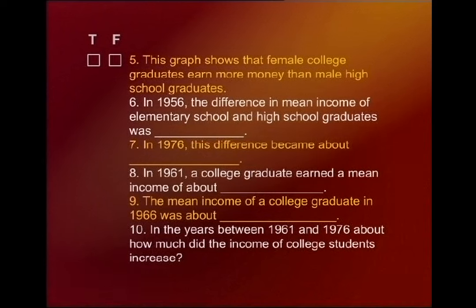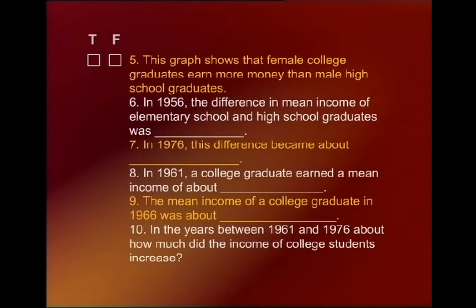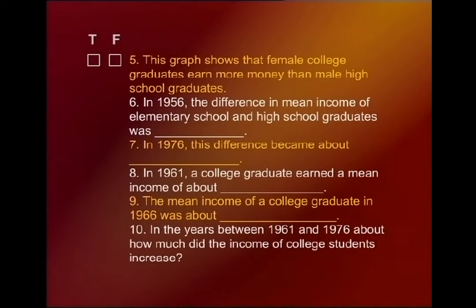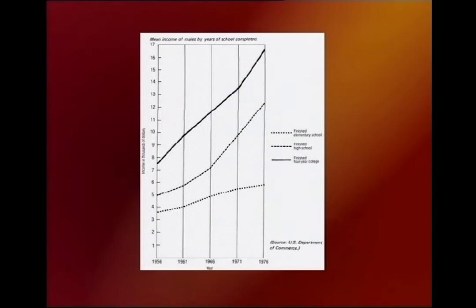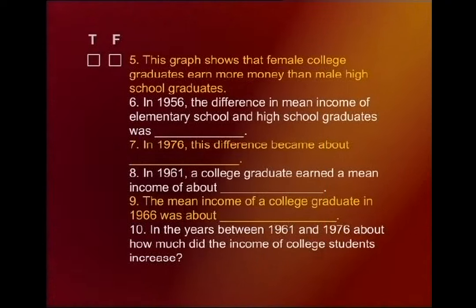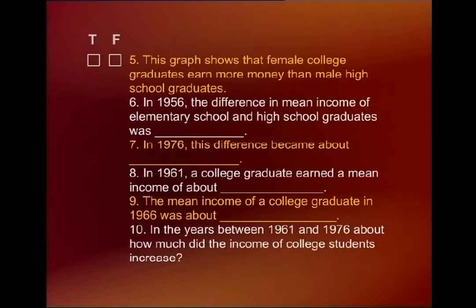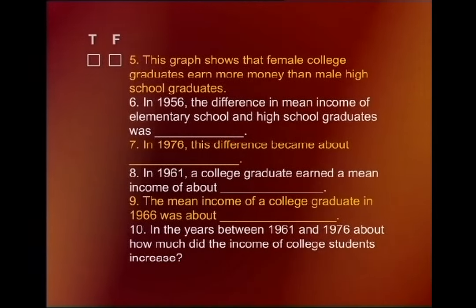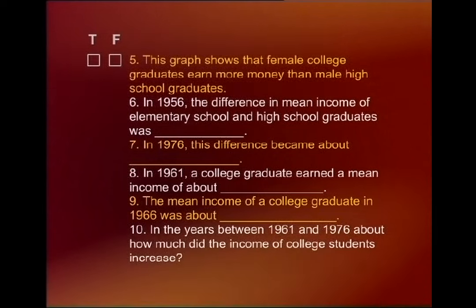For the rest of the statements, look at the graph carefully and pick out the figures. In 1956, the difference in mean income of elementary school and high school graduates was, according to the graph, about $1,250.